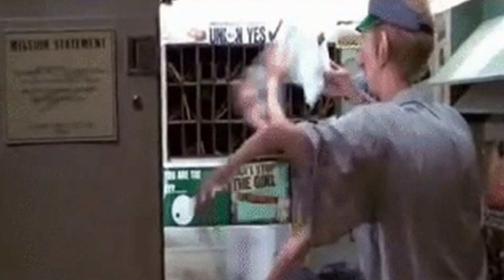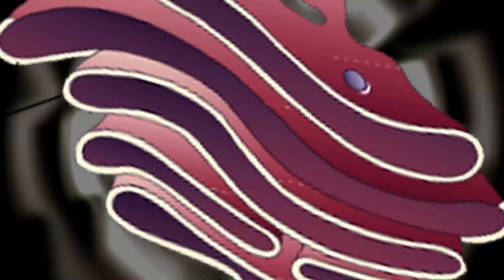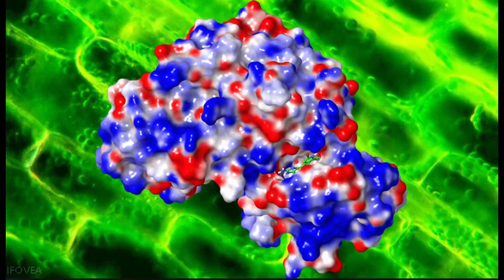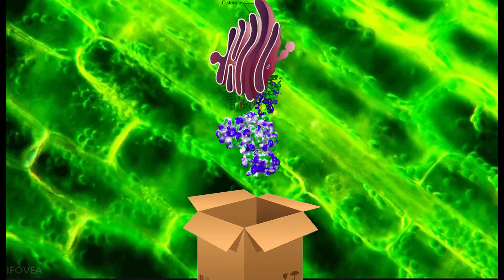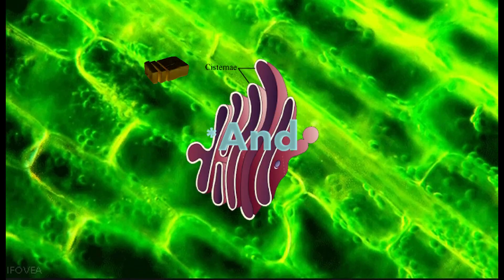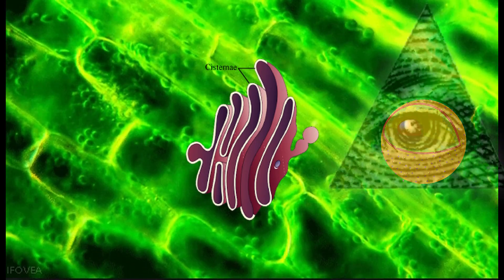The Golgi body basically acts as a protein post office. It modifies, sorts, and packages proteins for the body's use. It also stores and sorts lipids to create lysosomes which help with digestion.